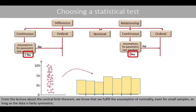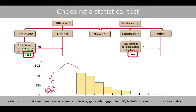From the lecture about the central limit theorem, we know that we fulfill the assumption of normality even for small samples, as long as the data is fairly symmetric. If the distribution is skewed, we need a larger sample size, generally bigger than 30, to fulfill the assumption of normality.